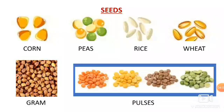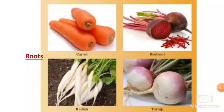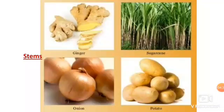And children, we also eat the roots and stems of some plants. Carrot, beetroot, radish, and turnip — these are the roots of some plants, and you all must have eaten them. Now look at these examples: ginger, onion, sugarcane, and potato. These are the stems of plants.